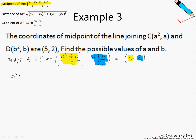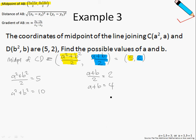From here, I can break this up into two separate equations, because the coordinates correspond accordingly. So A² plus B² over 2 equals 5, and simplifying, A² plus B² equals 10. And A plus B over 2 equals 2, so simplifying, A plus B equals 4, and A equals 4 minus B. Let's call this equation 2. Substituting equation 2 into equation 1, I will have (4 minus B)² plus B² equals 10.